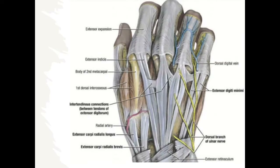The juncturae of the EDC lie in the distal half of zone 6 and are fairly consistent. Note that the EDM actually has two slips, and sometimes there's no EDC to the little finger — just a junctural connection which transmits the force of the EDCs through the sagittal band and extensor expansion of the little finger. This is relevant when faced with multiple cut tendons: you may see two slips of EDM but be looking for a little finger EDC in the fourth compartment, when the radial slip of the EDM is actually lying in the fifth compartment.